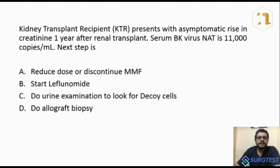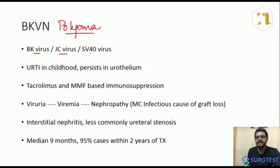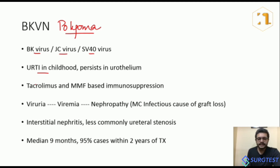I'd like to discuss BK virus nephropathy, which is an important MCQ topic and clinically relevant. BK virus belongs to a family called polyoma viruses. Three polyoma viruses are known to be pathogenic to humans: the BK virus, the JC virus, and the SV40 virus. BK virus causes upper respiratory tract infection in childhood, and more than 80% of adults have evidence of prior exposure. After causing a URTI in childhood, it persists in the urothelium.